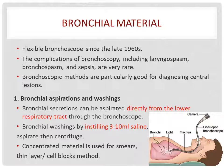The bronchoscopic methods are particularly good for diagnosing central lesions in the proximal airways. Bronchial secretions can be aspirated directly from the lower respiratory tract through the bronchoscope. Bronchial washing can be performed by instilling 3 to 10 ml of saline, then the aspirate is collected. The fluid is centrifuged and the concentrate used to make smear, thin-layer preparation, or cell blocks. Cell blocks are similarly prepared for histology.